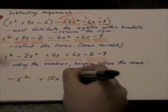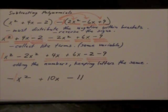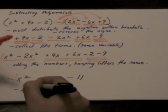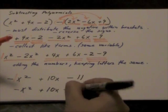And then minus 2 minus 9 will give me a negative 11. So therefore, when we are subtracting these two polynomials or trinomials, we get the following expression: negative x squared plus 10x minus 11.